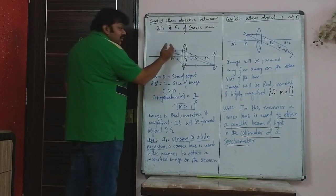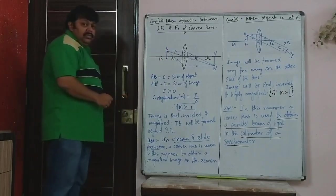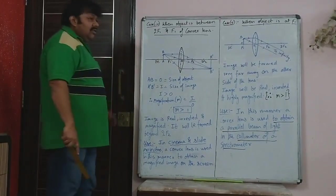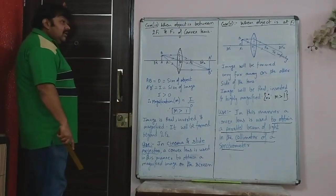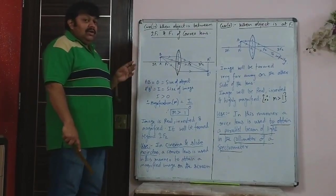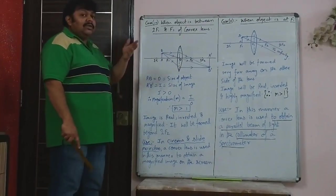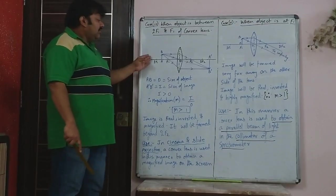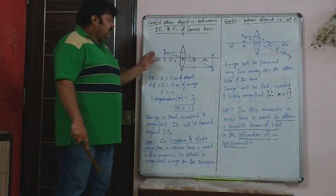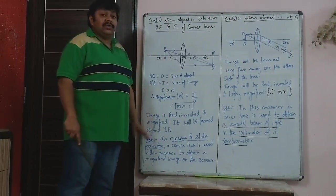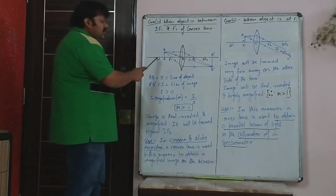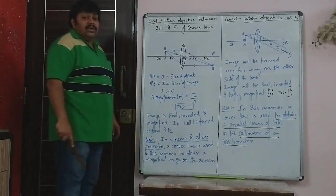The objects are coming closer and closer, and the image is being formed according to the position of the object. First we had seen infinity, then very far away — not infinity, not heavenly bodies but objects like a tree. Then we saw the object beyond 2F1, then at 2F1, then between 2F1 and F1. So now we are going to that case — the fourth case — object between 2F1 and F1.